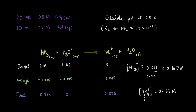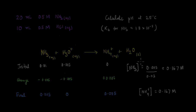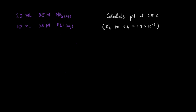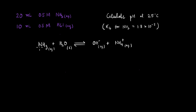Now that we have these molar concentrations, we know that the remaining NH₃ will be in equilibrium with the water present in the solution. Writing that equilibrium reaction: NH₃ + H₂O ⇌ OH⁻ + NH₄⁺. For the initial molar concentrations, we have 0.167 M NH₃ and 0.167 M NH₄⁺ already in solution, and initially the concentration of hydroxide ions is 0.